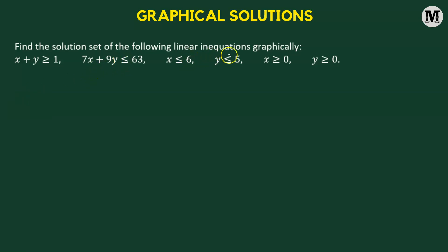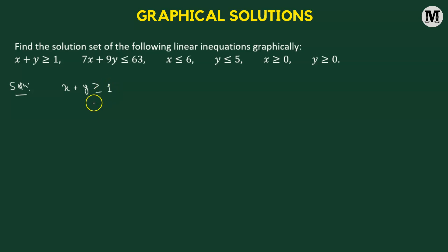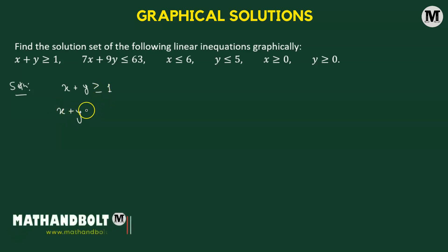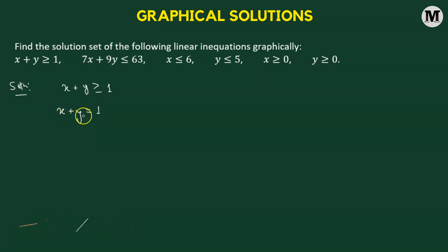Find the solution set of the following linear inequations graphically. Starting with the first inequation, we have x plus y greater than or equal to 1. We'll convert this into a linear equation by replacing the inequality symbol with an equality symbol. This gives us a linear equation in two variables x and y.